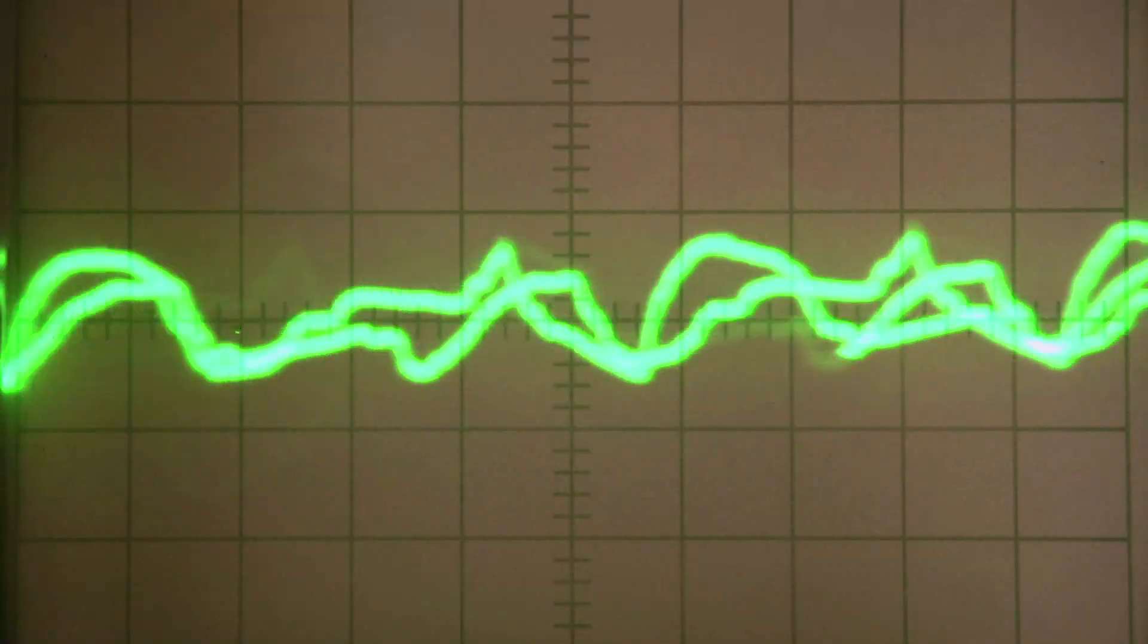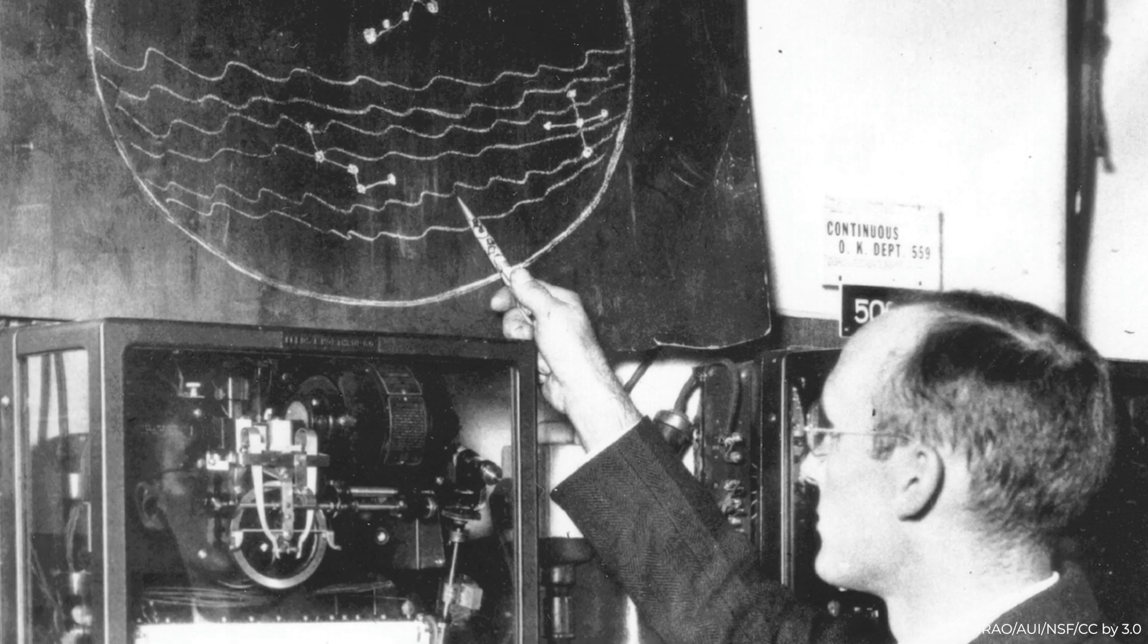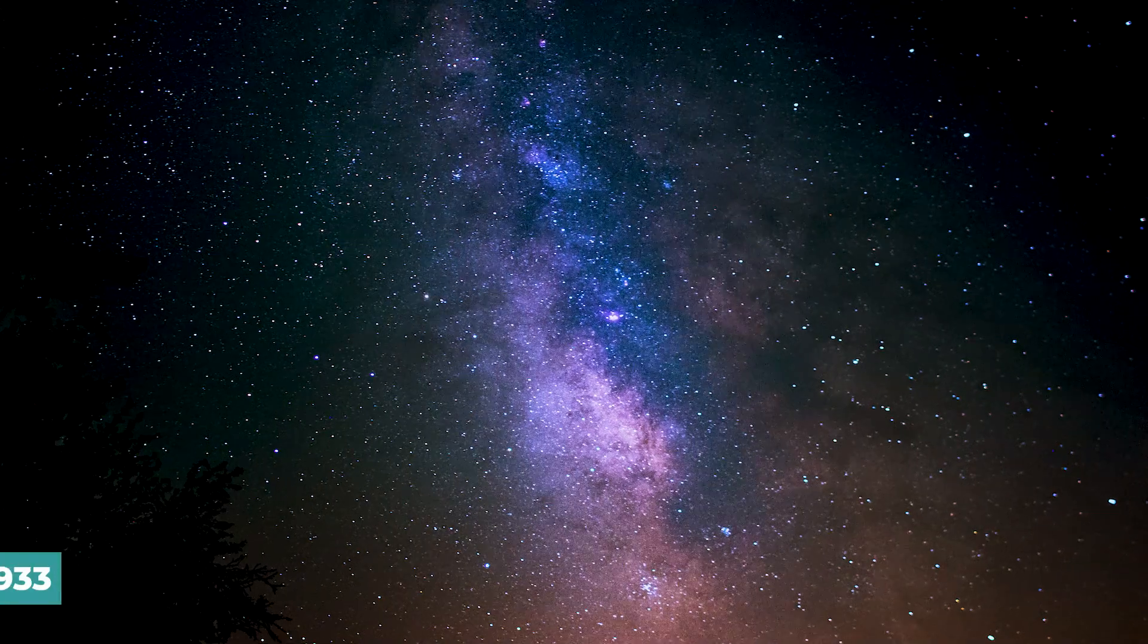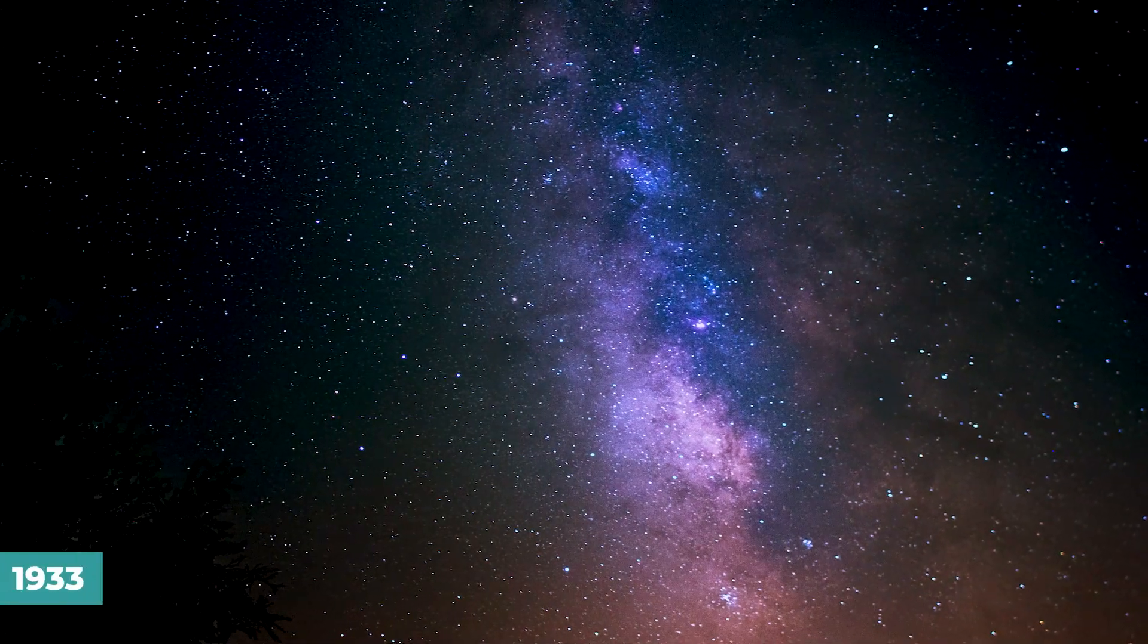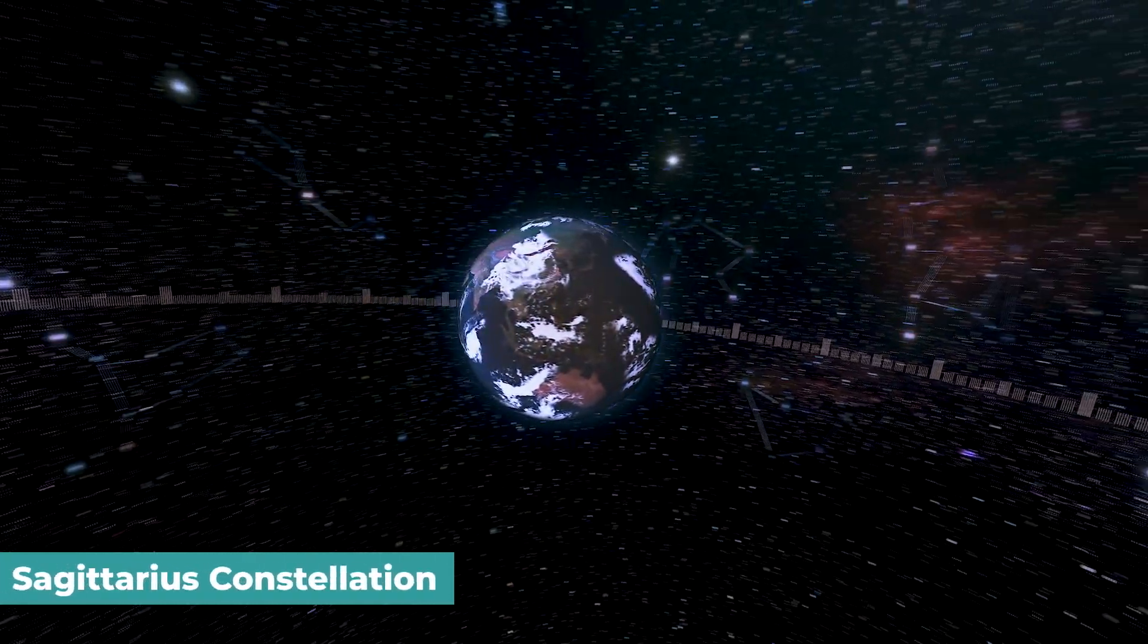Jansky started working on figuring out where this signal came from and why it was disrupting the phone connections. Finally, in 1933, he discovered that this signal came from the Milky Way in the constellation of Sagittarius.